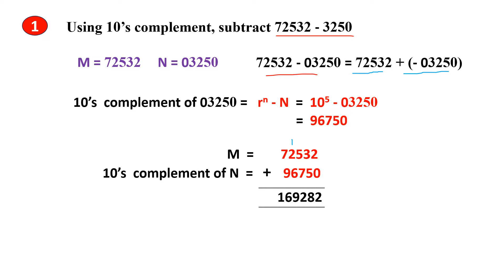Then 6 plus 2 plus 1 (carry) is 9. Then 7 plus 9 is 16 — so 6 comes down and 1 is the end carry. You have to discard this end carry.